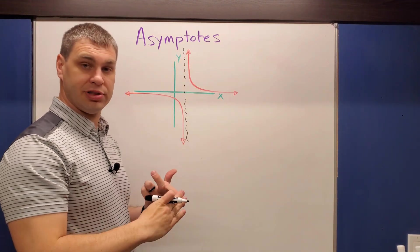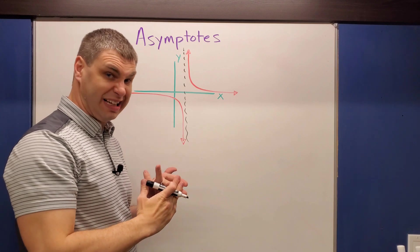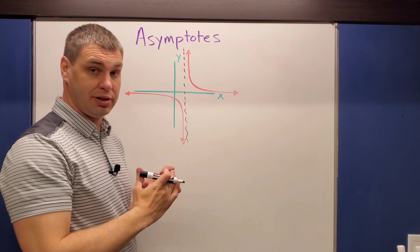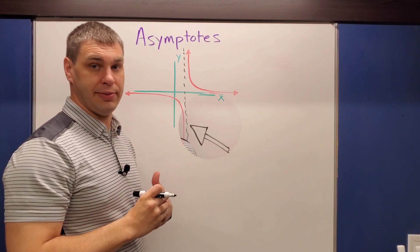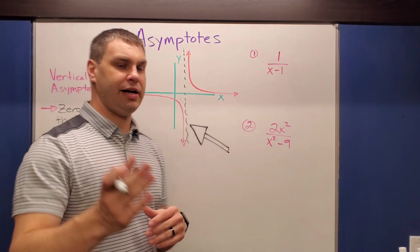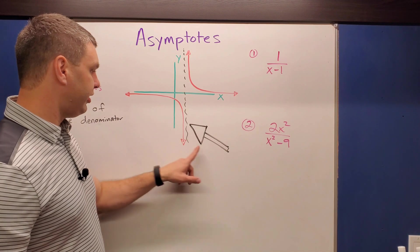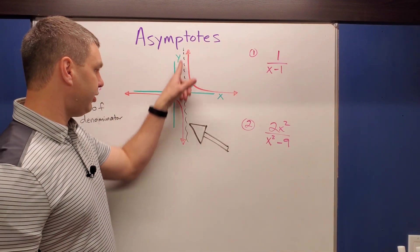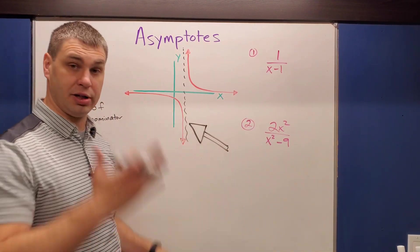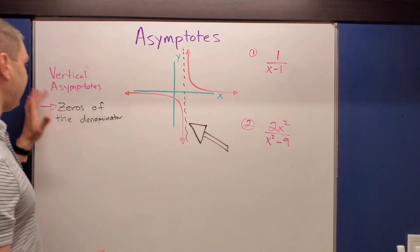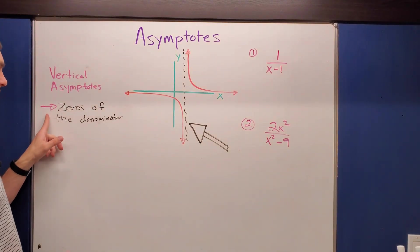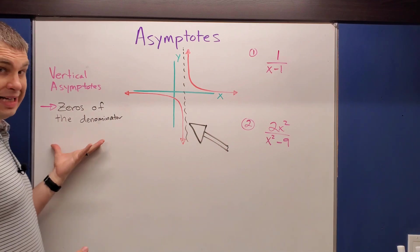We can have horizontal, slant, and vertical asymptotes. Looking at this example on the board, this is a vertical asymptote — it goes up and down.